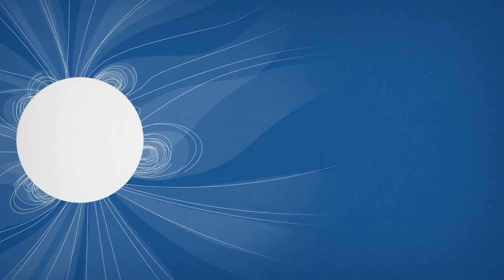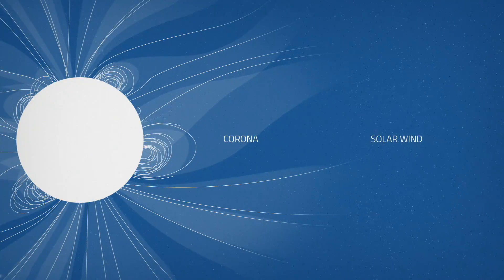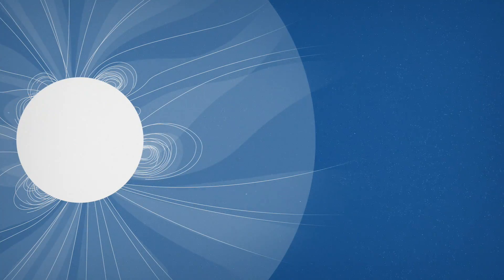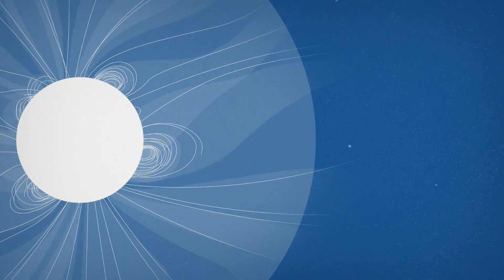New research indicates that there is a discernible transition between the corona and the solar wind. This difference is marked by a visible change in the consistency of solar material departing the Sun.